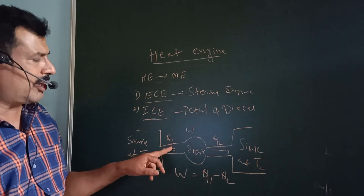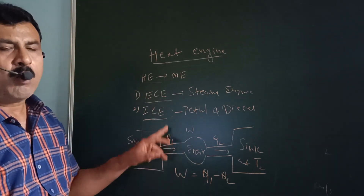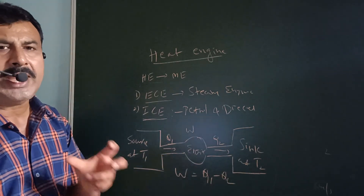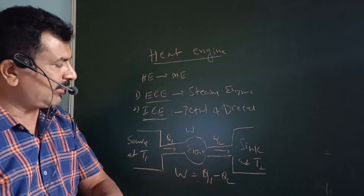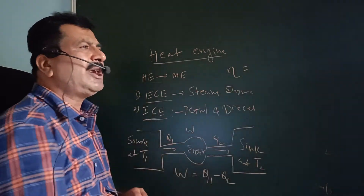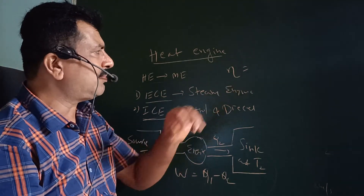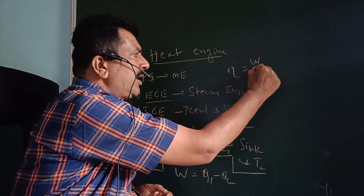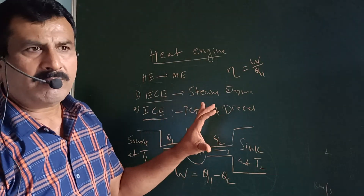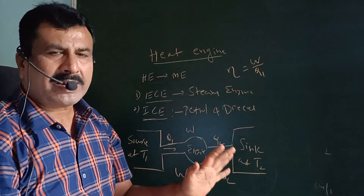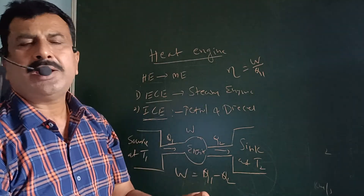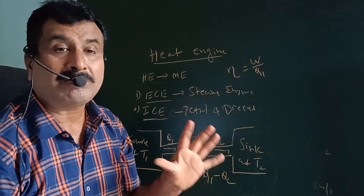For example, if 100 J of heat is absorbed and 20 J of heat is rejected, then 100 minus 20 equals 80 J of work done. The efficiency of the heat engine is denoted by the symbol eta, and is equal to W divided by Q1. The ratio of useful work done by the engine to the heat absorbed by the engine in each cycle is called efficiency of the heat engine.